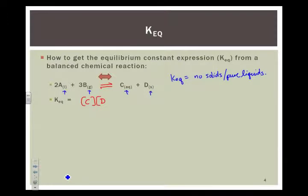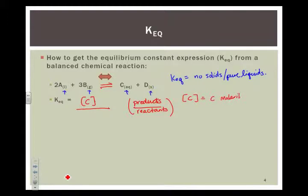So, I'm going to have my products over my reactants but I'm only going to have products that are not solids or pure liquids. Now, substance D here in the products, it's a solid, so I can't include it in my equilibrium constant expression. Then, I'm going to tackle my reactants. So, it's always going to be products divided by reactants. And, I'm denoting the concentration of each by putting them in brackets. So, brackets around C is telling me this is the molarity of C.